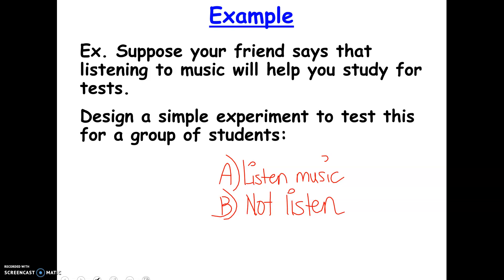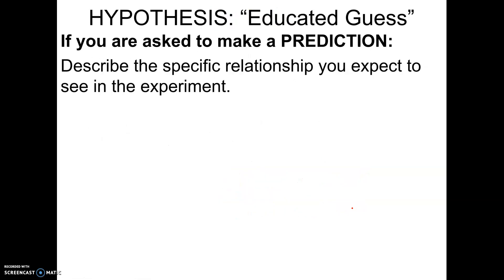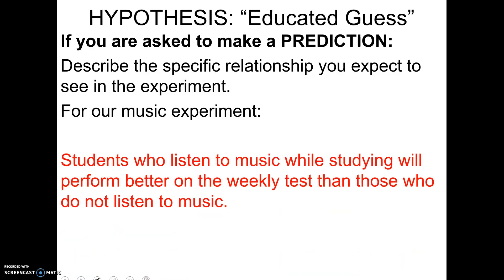We've got two groups: one receiving the new variable and one not receiving the variable. We'll know whether music helps by measuring a test they're going to take. Our hypothesis is a prediction of what we think is going to happen, and it needs to describe the specific relationship we expect to see. For example: students who listen to music while studying will perform better on the weekly test than those who do not listen to music.